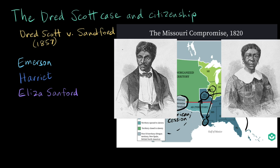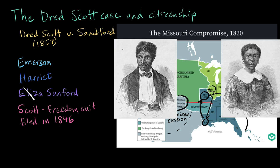In 1846, Dred tried to purchase their freedom from her, but she refused. So he filed a freedom suit in Missouri court, pleading that since he had been taken into a free state, he should have been freed, and that his family was being held unjustly. The case made its way through the courts over several years, and in the meantime, Eliza transferred ownership of the Scotts to her brother, John Sanford. Since he lived in a different state, it became a federal case, and eventually it came before the Supreme Court.